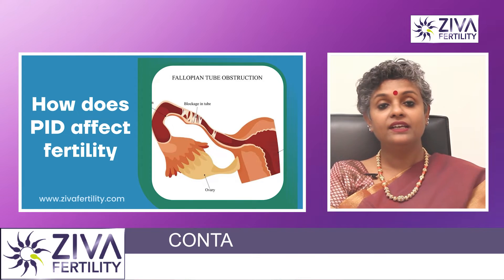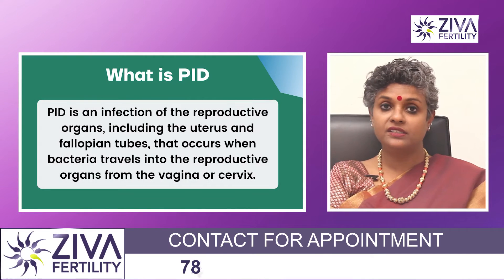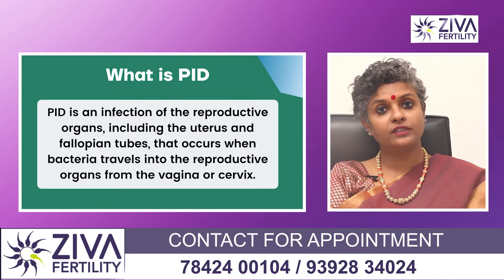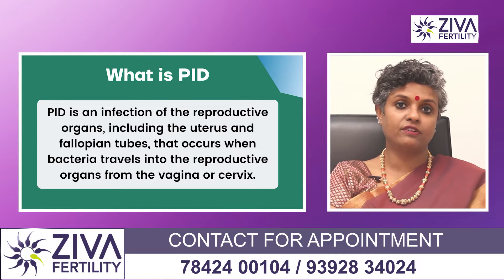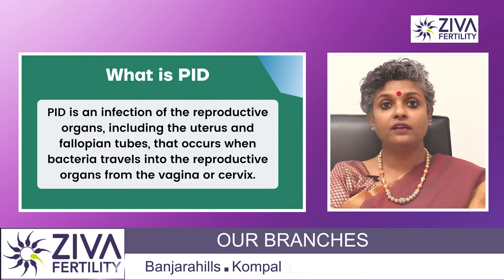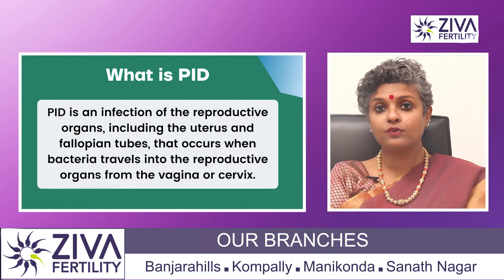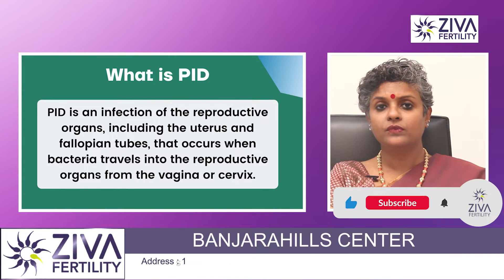PID is pelvic inflammatory disease and it's an infection of the reproductive organs including the uterus and the fallopian tubes. It occurs when bacteria travels into the reproductive organs from the vagina or cervix.